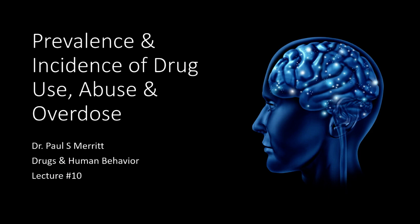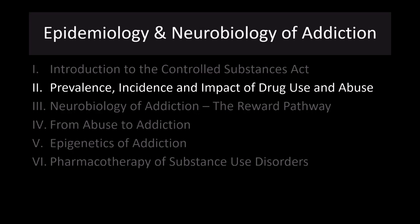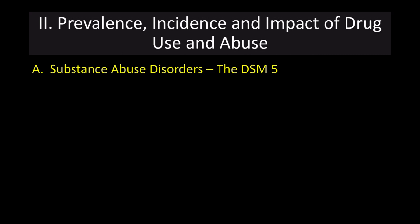Hello and welcome to the next part of our Drugs and Human Behavior course, in this section on Epidemiology and the Neurobiology of Drug Addiction. Last time we talked about the Control of Substances Act, and in this fairly short lecture we're going to talk about the prevalence and incidence of drug use, abuse, and overdose. This is a major crisis in the United States and gaining traction worldwide. The first thing we'll talk about is substance abuse disorders, which are contained in the Diagnostic and Statistical Manual of Mental Disorders, version 5.